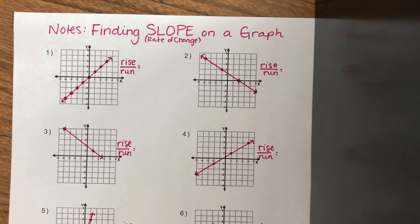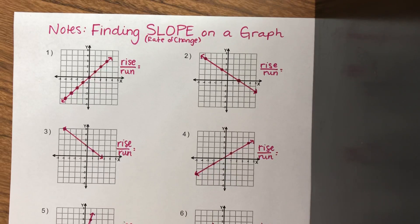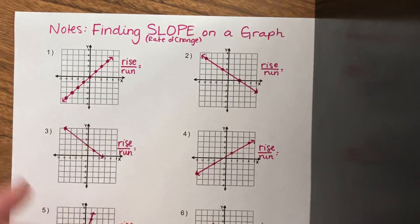This tutorial is going to help you find the slope of a graph. We know that slope and rate of change are the exact same thing. So if I asked you to find the rate of change of a graph, it's the same thing as finding slope — you can see I used both terms there.